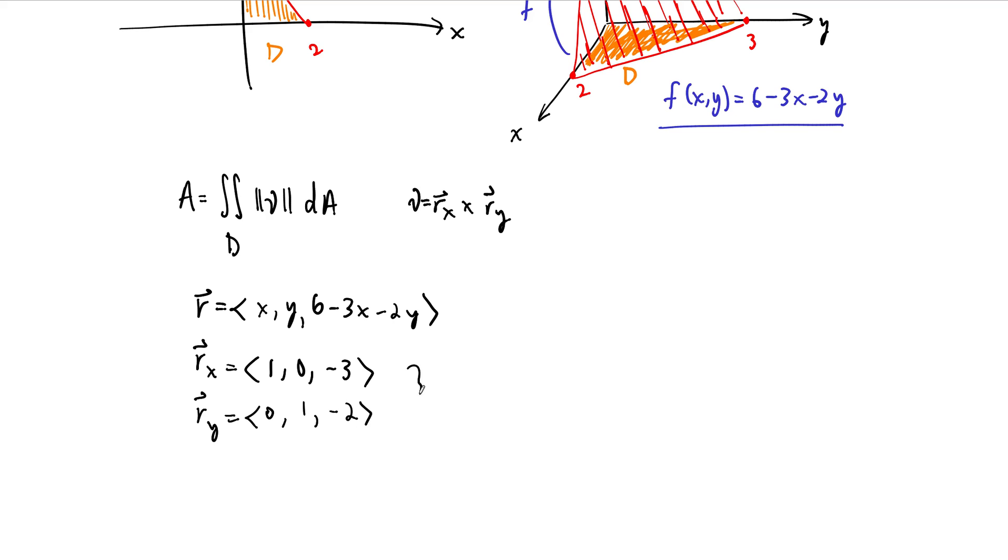And our normal vector field, then, nu, is just going to be a constant vector field. It's 0 minus a negative 3, so positive 3. It's going to be 0 minus a negative 2, so positive 2. And then 1. And so the length of this normal vector field is the square root of 14.